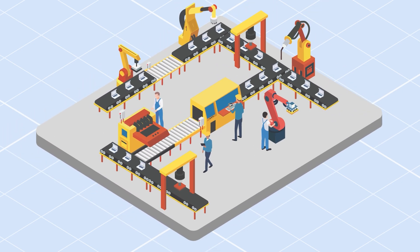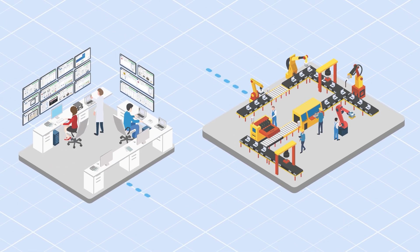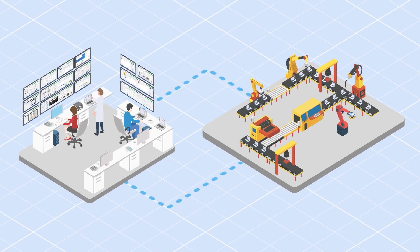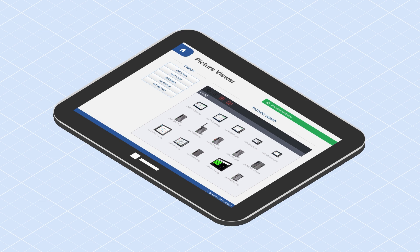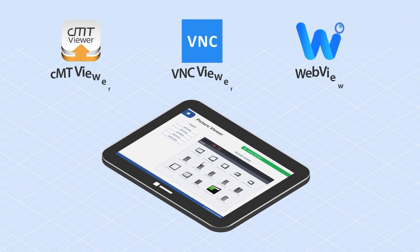Back in the old days, an operator had to stand in front of a machine just to check on it. Now there are alternative ways for monitoring with Waintex CMT X-HMI, which provides three distinct options, offering you flexibility when facing different situations.